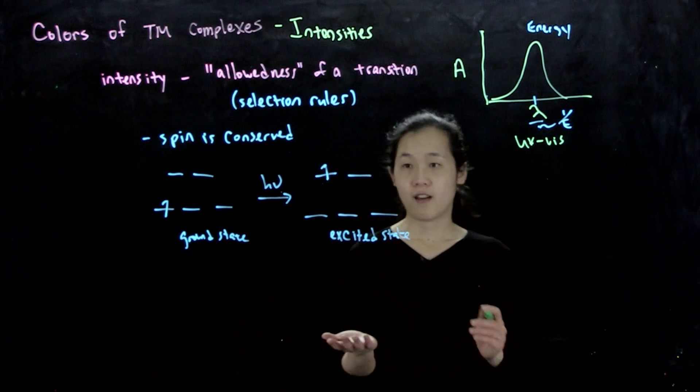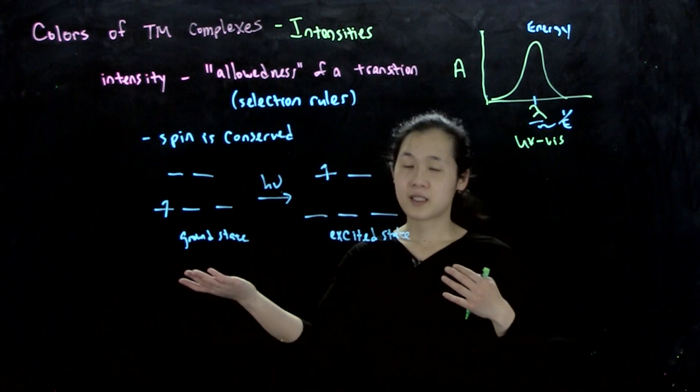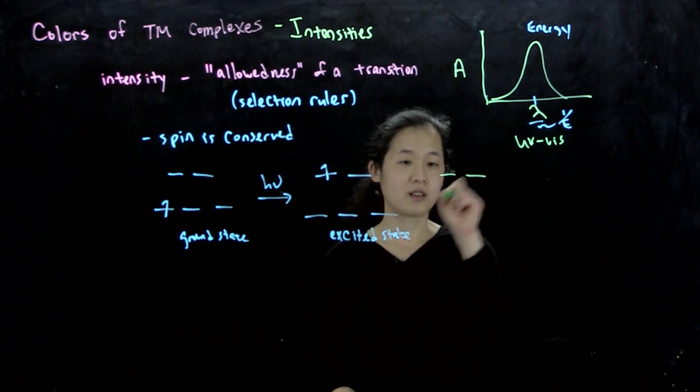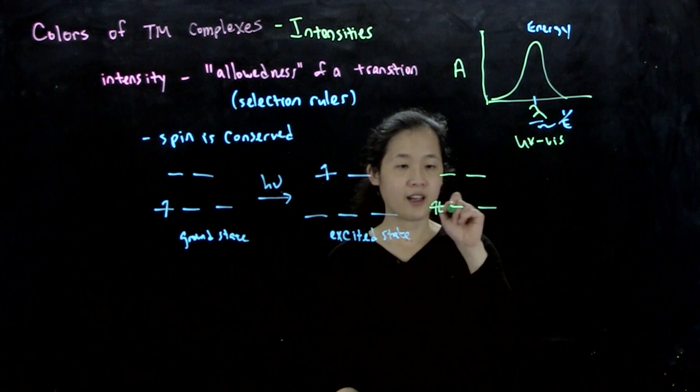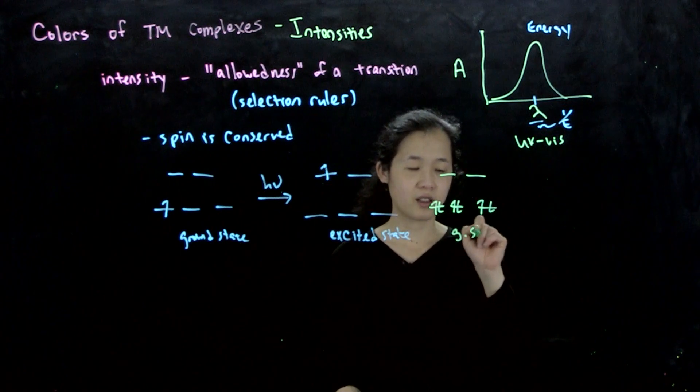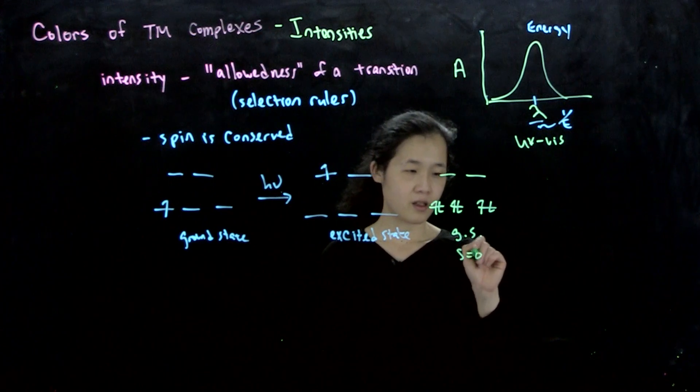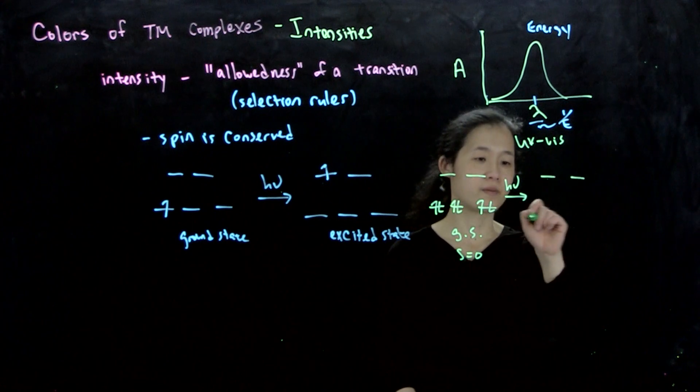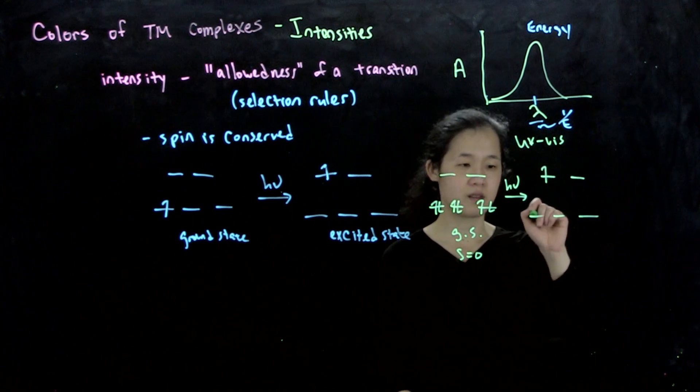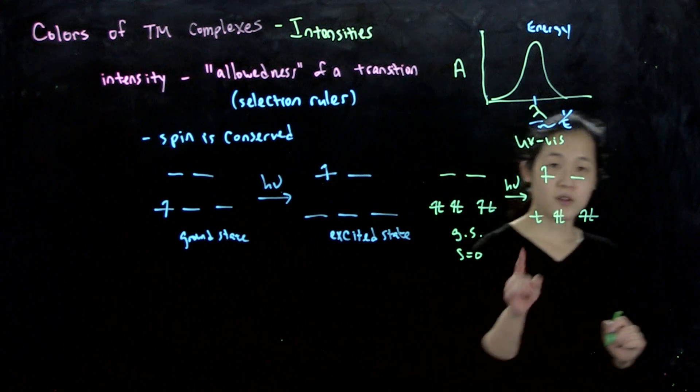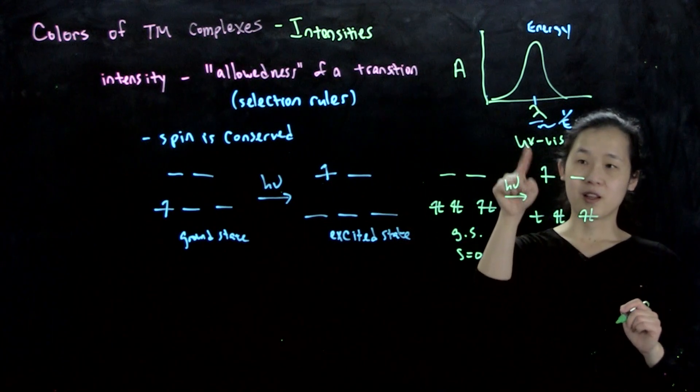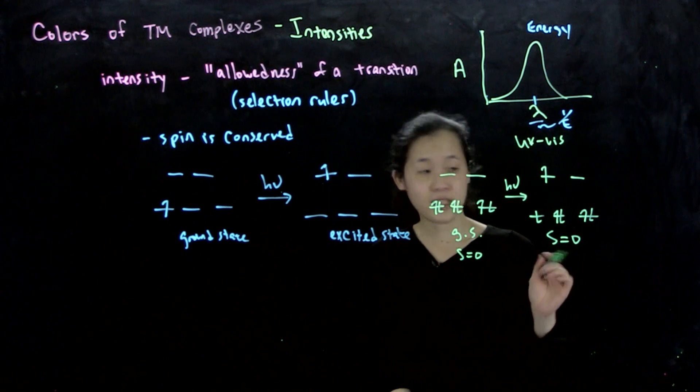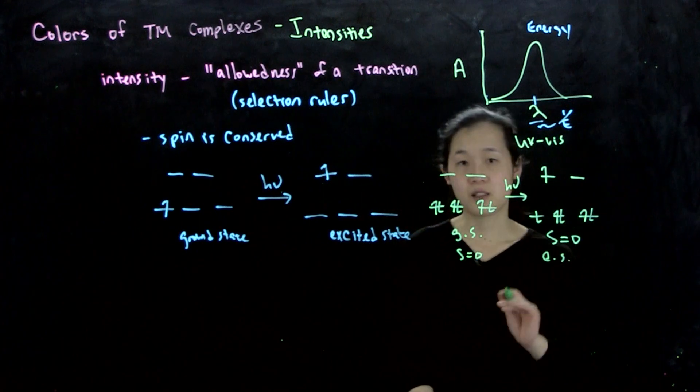So the same thing happens if we have all electrons paired, s equals zero in the ground state. It must be s equals zero in the excited state too. So another example. Suppose we have, this is our ground state. These are all paired, s equals zero. If we excite one of our electrons up, so here we have one unpaired electron pointing up, but we have one unpaired electron pointing down. So this is still s equals zero in our excited state. So spin is still conserved.